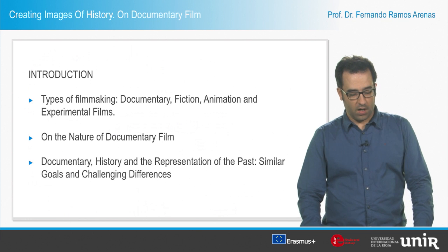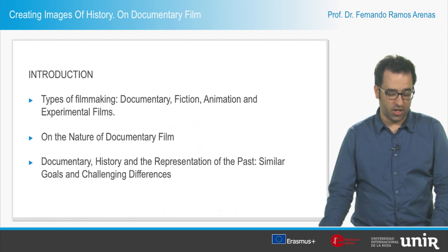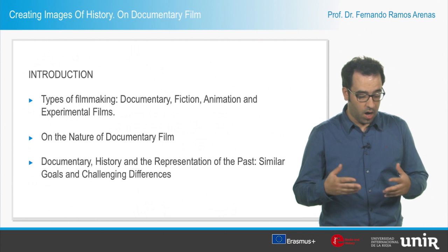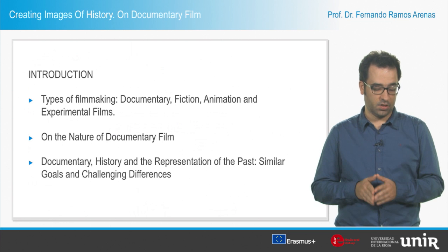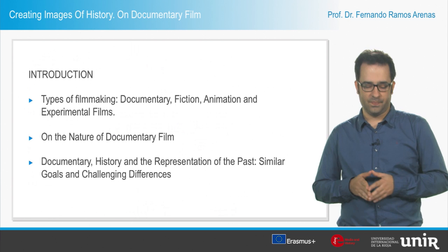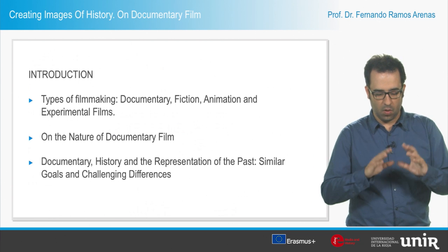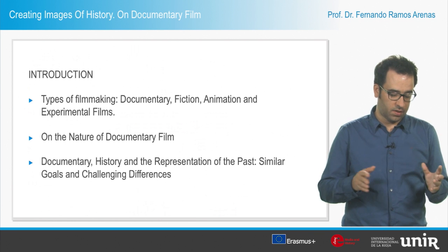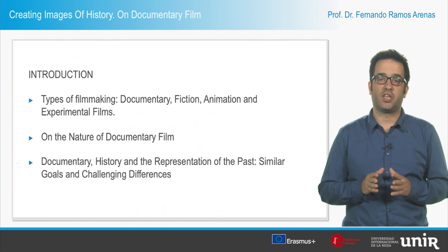Documentary film is one of the four main types of filmmaking, along with fiction, animation and experimental film. Documentary films are assumed to portray actual events and show actual people involved in those events. In this regard, documentary films share some general goals with history, if we consider their common realistic, positive approach to the representation of facts.